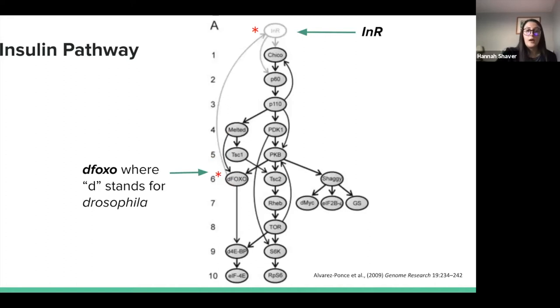Taking a closer look at where FOXO is in the scheme of things, we have INR at the top of the pathway. The arrows indicate genes that each one interacts with. Once we get down to FOXO, it goes all the way back to the top and interacts with INR like we mentioned before. It says deFOXO, which stands for Drosophila since we're looking at the insulin pathway within that species.